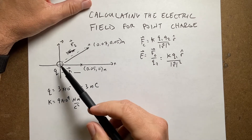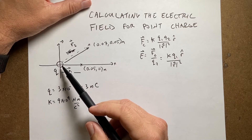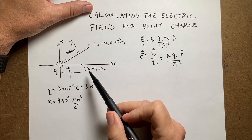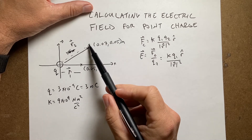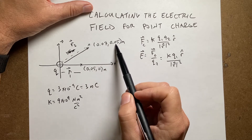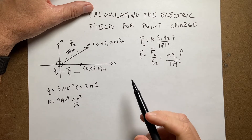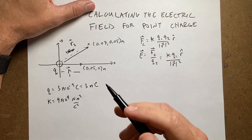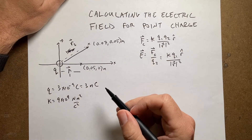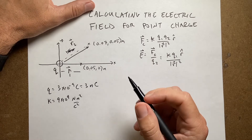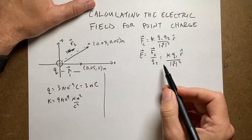I have a point charge at the origin and I'm going to find the electric field three different times. The first point is at 0.05 meters on the x-axis. Then at 0.07 on the x-axis and 0.05 on the y. And I'm going to do one where the charge is not at the origin. The charge is 3 nanocoulombs and k is 9 times 10 to the 9th.